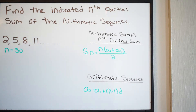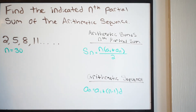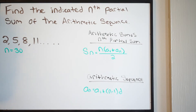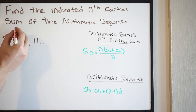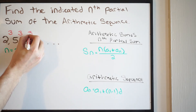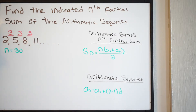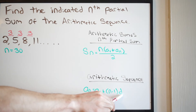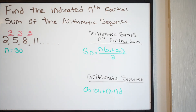Before we can do that, we have to find the value of the 30th term. In order to do that, we're going to use the equation for an arithmetic sequence. Our first step is to find the common difference between our terms. Going from 2 to 5 is 3, from 5 to 8 is 3, and from 8 to 11 is also 3. So our common difference D is going to be 3.